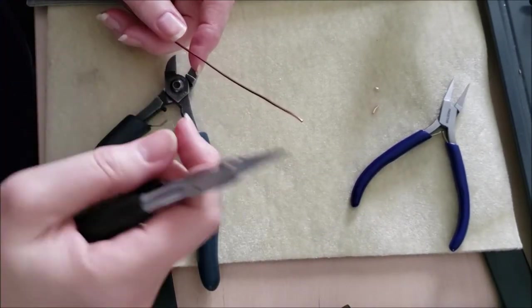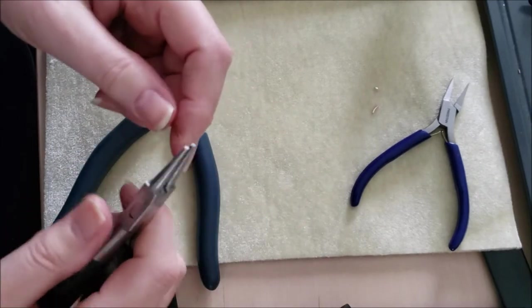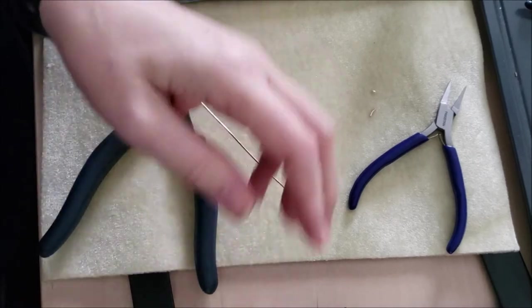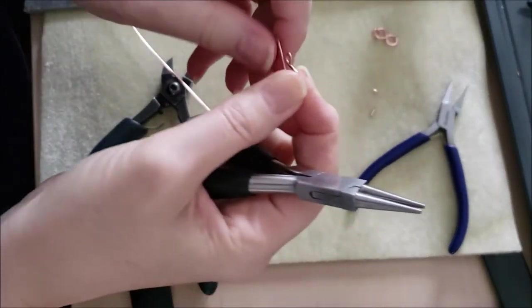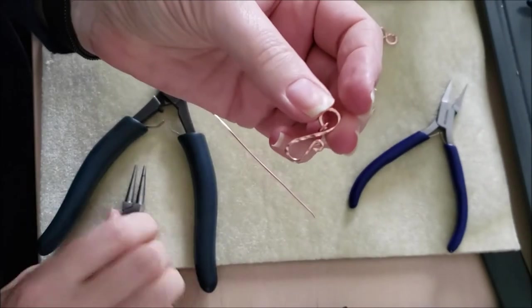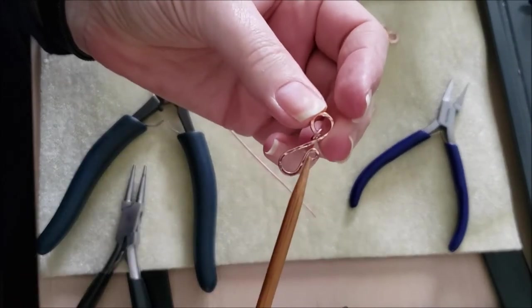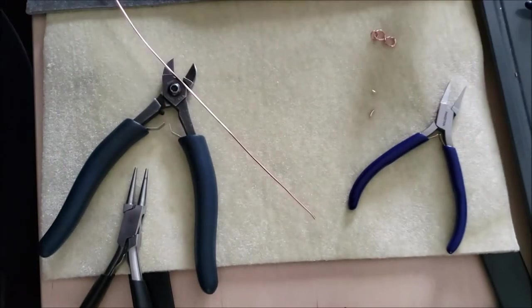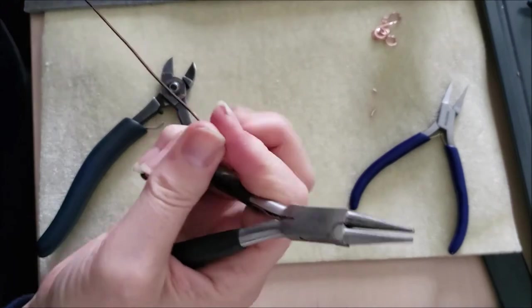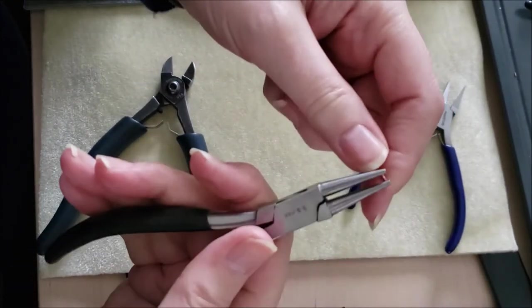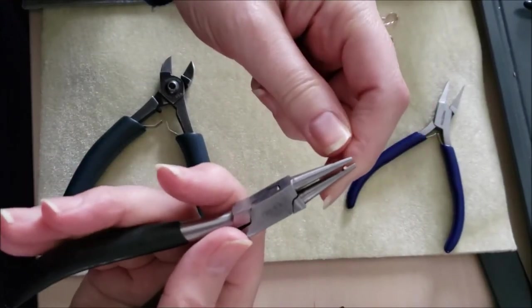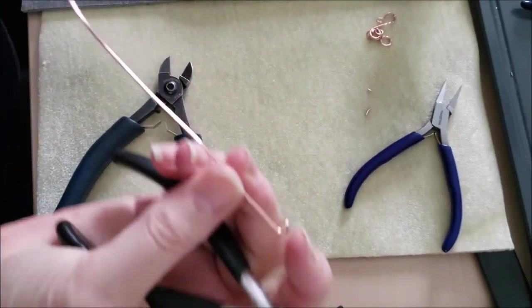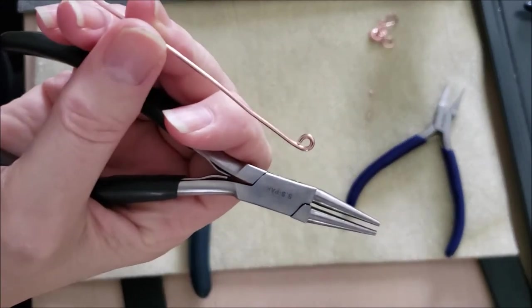The first part of the hook of the clasp that I usually make is a little loop on the end. You start with a little loop on the end, you make one curve and then you make another. Working close to the end of my pliers I'm just going to make a very tiny letter P.